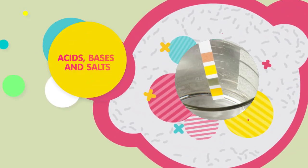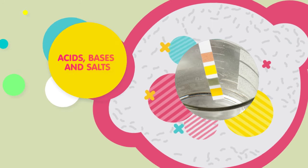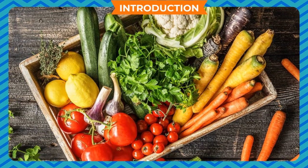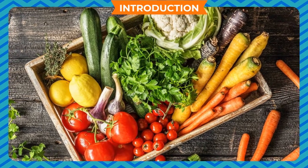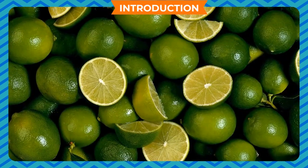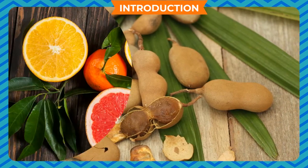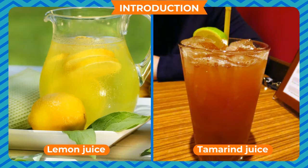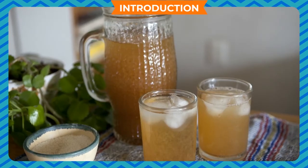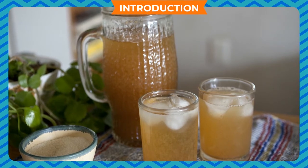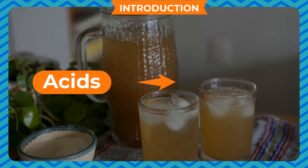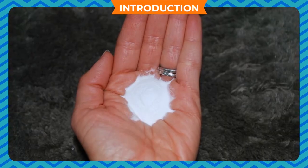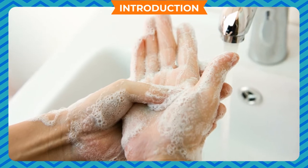Acid, bases, and salts introduction. Almost all substances have a taste — they may be sweet, salty, sour, or bitter. For example, sweet lime has a sour taste; tamarind tastes sour too. Substances which have a sour taste, like lemon juice or tamarind juice, are said to be acids. The word acid comes from the Latin word 'acidus', which means sour.